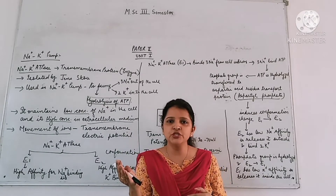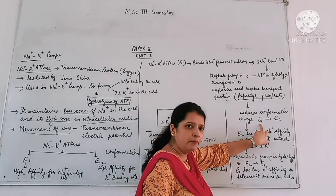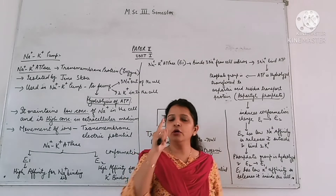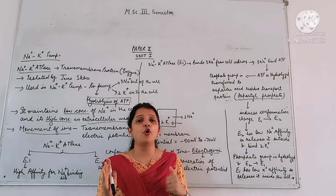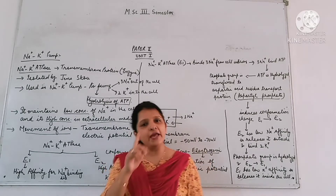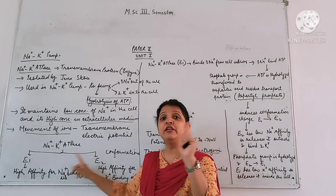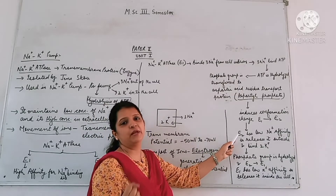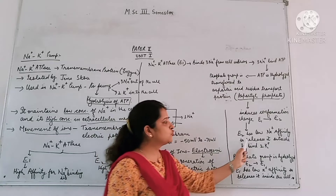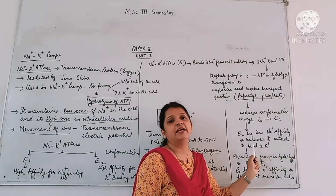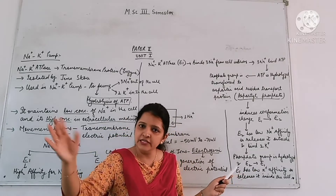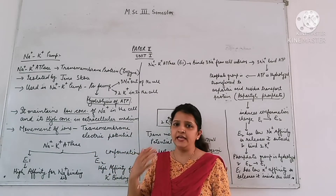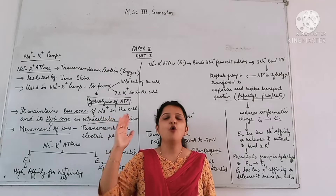This aspartyl phosphate brings about a conformation change from E1 to E2. As we know, E2 has low affinity for Na+ and high affinity for K+. So because E2 has low Na+ affinity, it will release the Na+ ions outside the cell. After releasing Na+, it will then bind K+ — because it now has high affinity for K+ and low affinity for Na+.